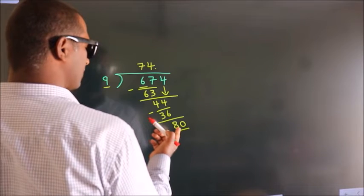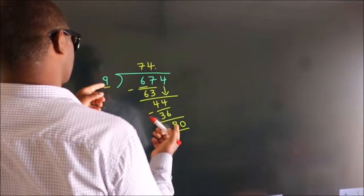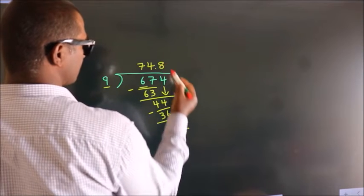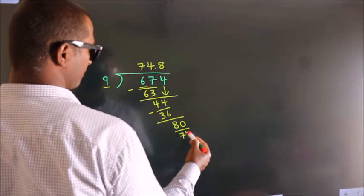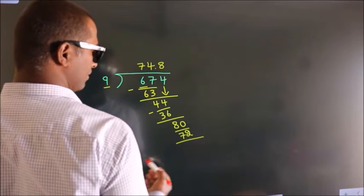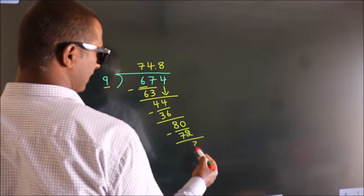A number close to 80 in 9 table is 9 8s, 72. Now we subtract, we get 8.